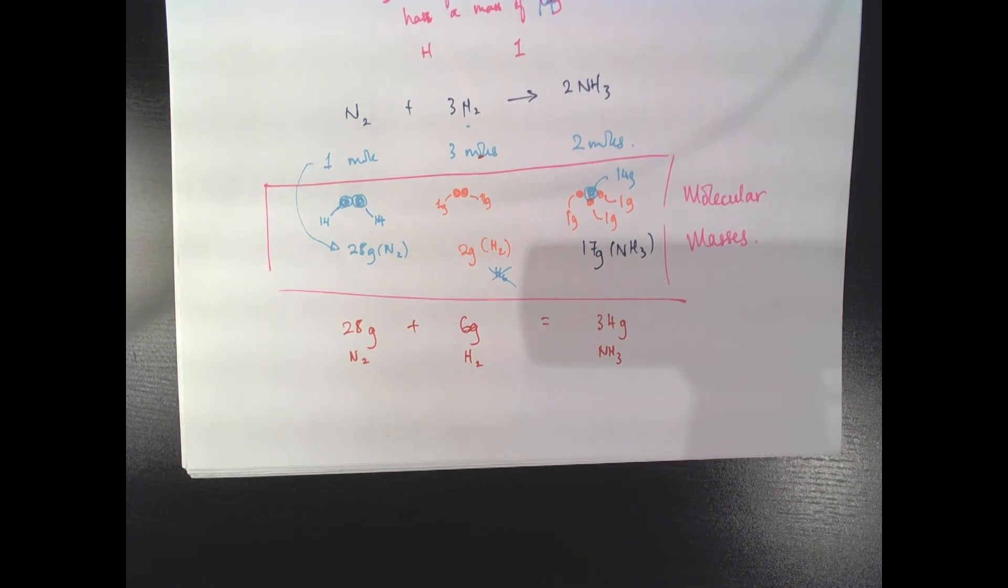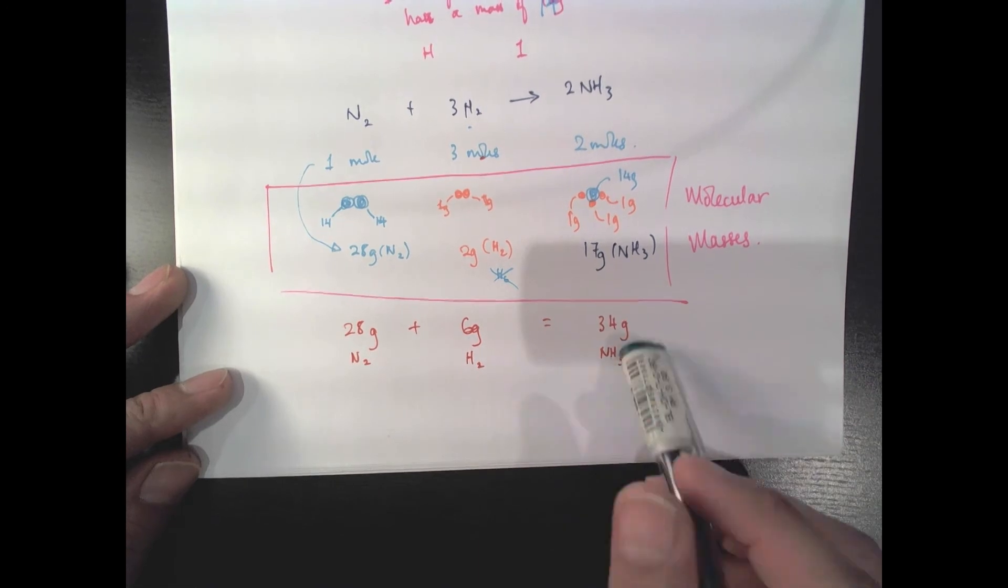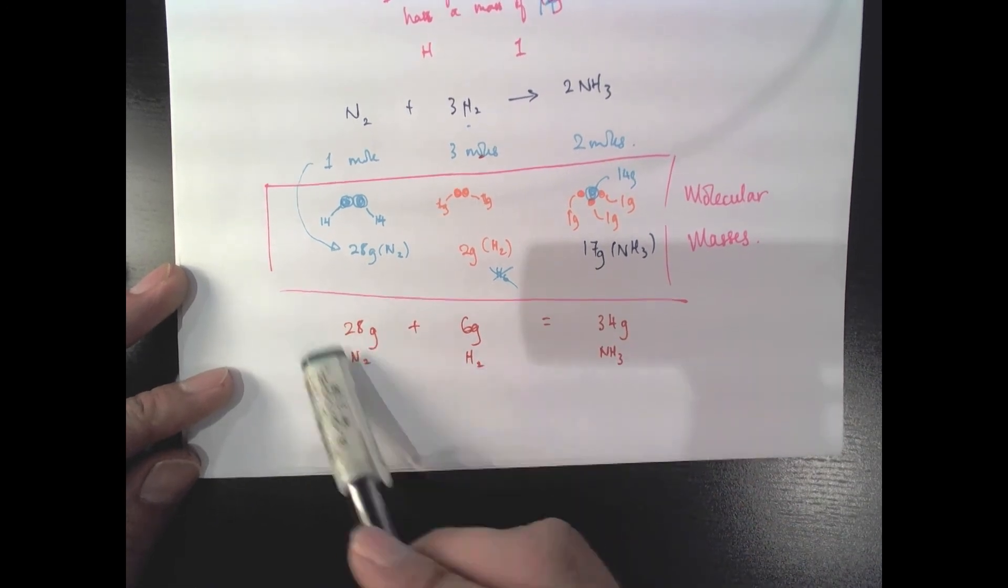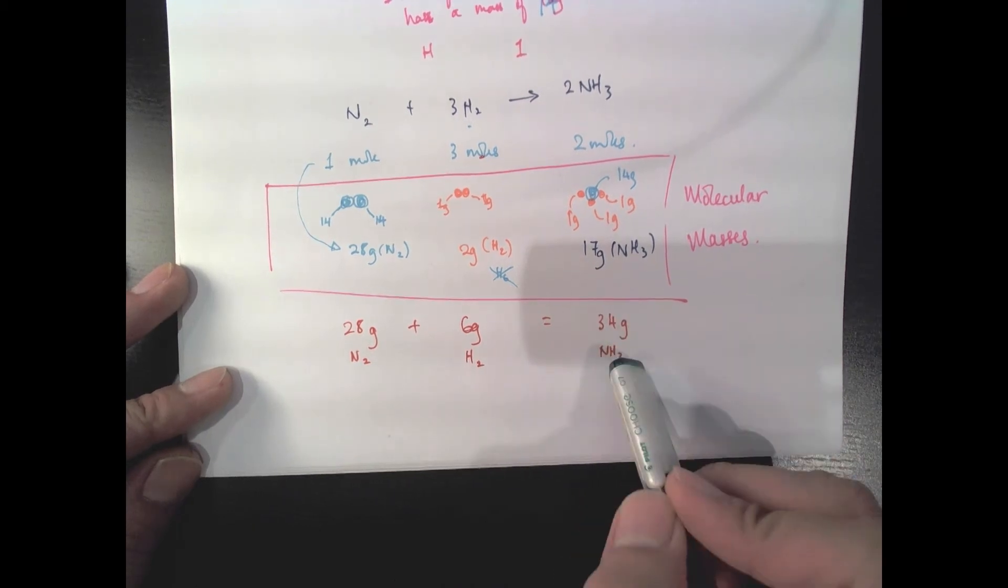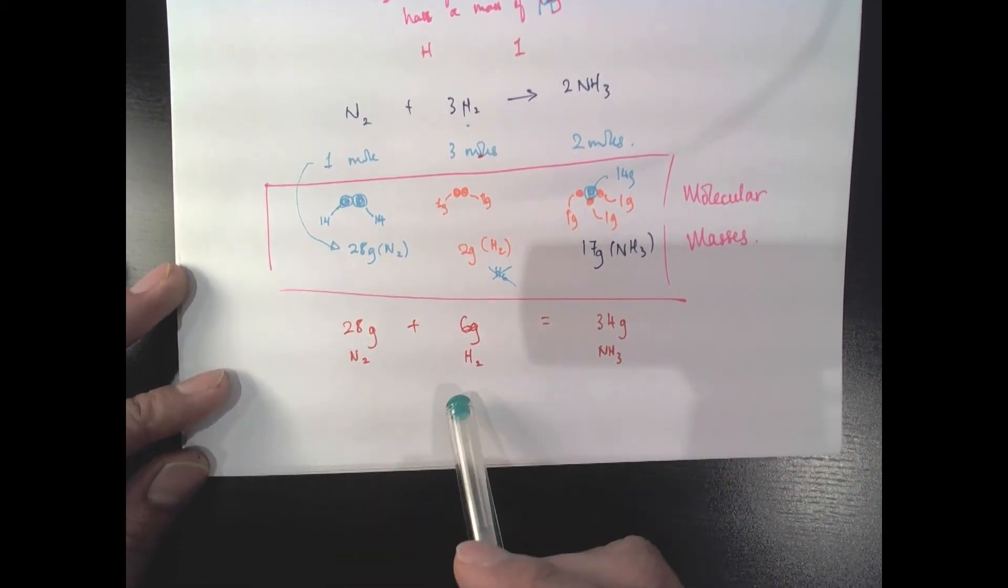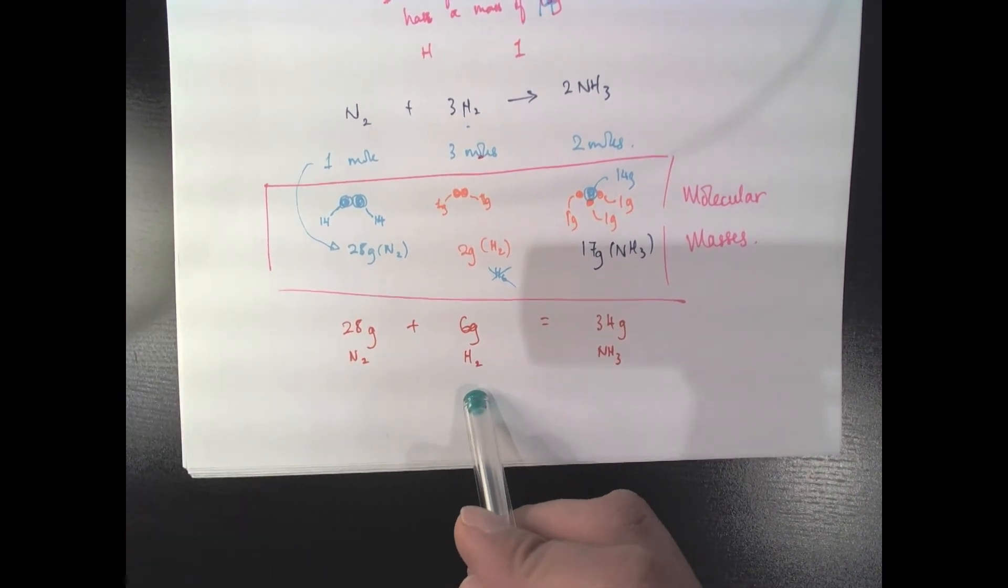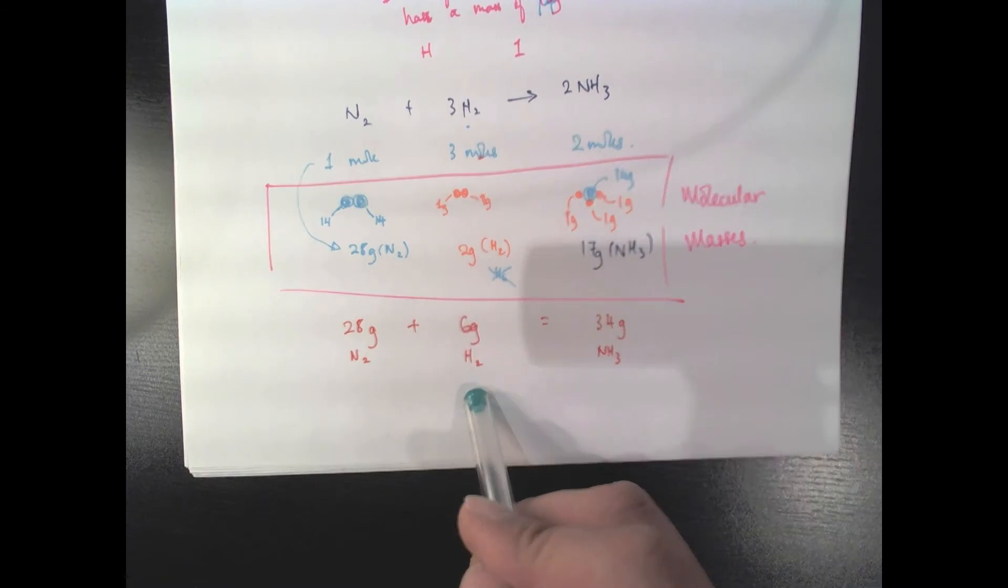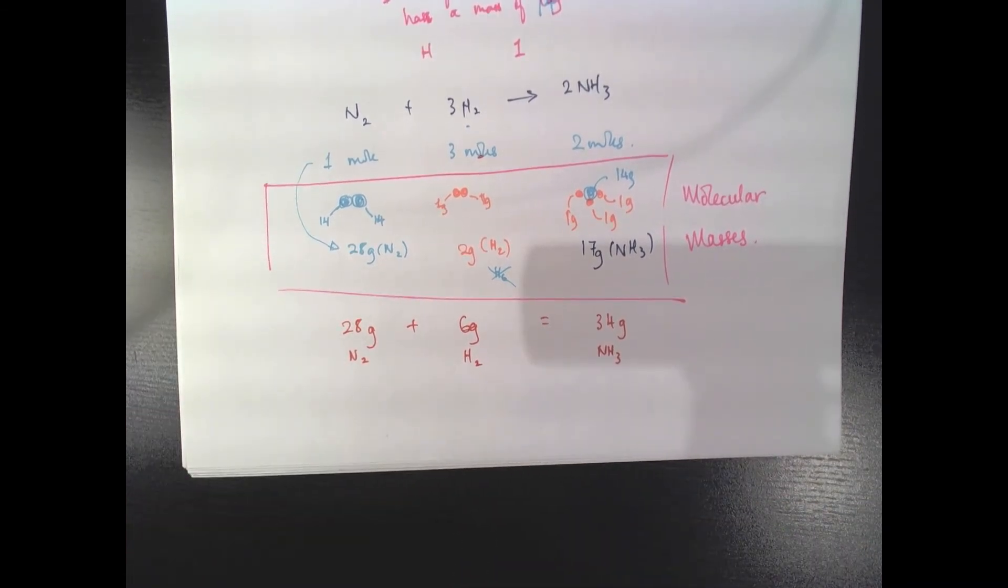So now if I were to go in the lab and someone would tell me, oh, make me 34 grams of ammonia, I can measure out quite easily 28 grams of nitrogen, 6 grams of hydrogen. I can also measure that out quite easily without having to count the individual molecules. And I can now make 34 grams of ammonia.